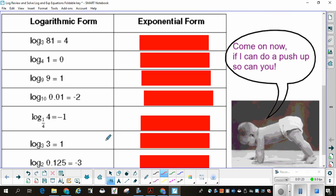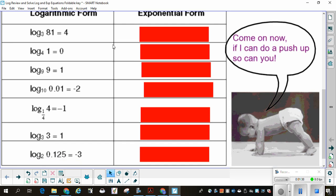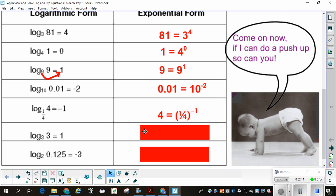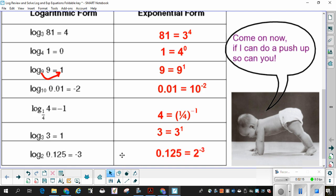Now you've done these when you did your lesson. If you haven't or if you don't have yours right with you, go ahead and pause and run through these. Think about what your answer would be. Did the 3 push the 4 up? Did the 4 push the 0 up? And the 9, the 1? This base 9 came over and pushed it up. 10 pushed up, a quarter pushed up, the 3 pushed the 1 up, and the 2 pushed the negative 3 up.